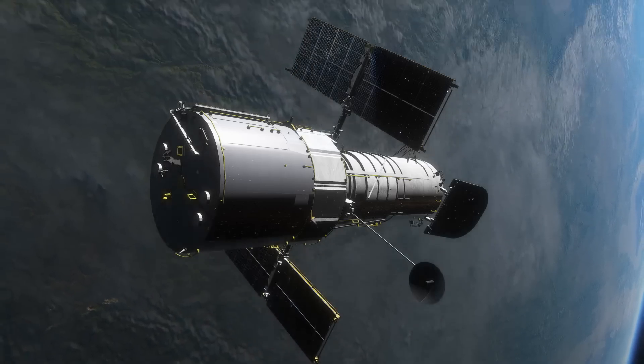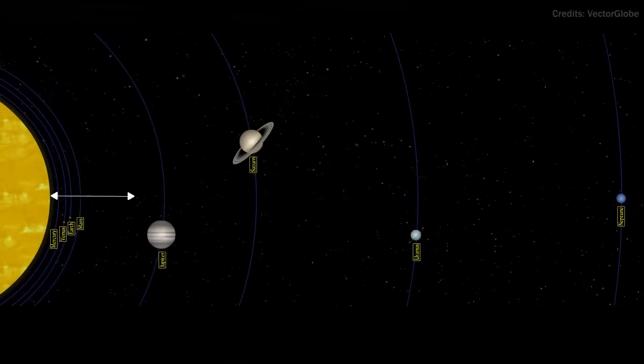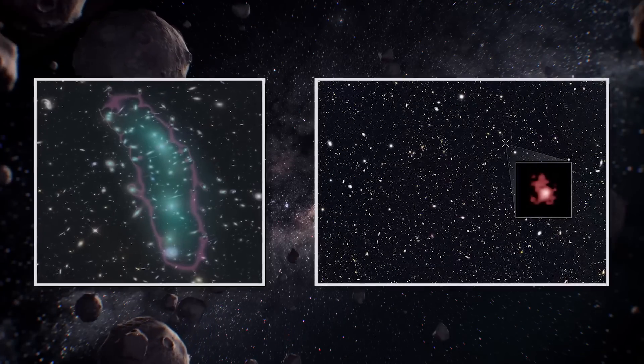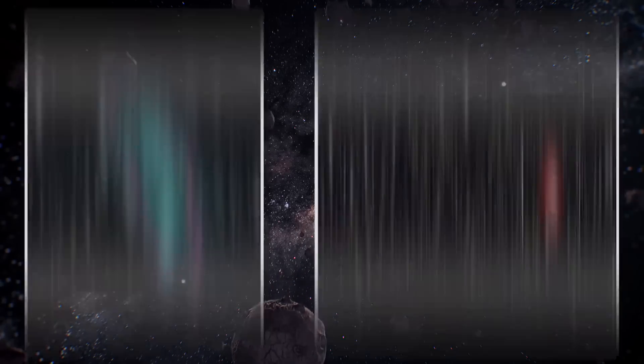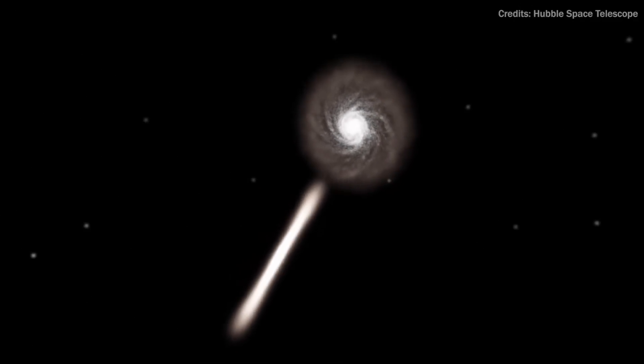The Hubble Telescope travels at 17,500 mph and has covered the distance equivalent to a trip to Neptune, our solar system's farthest planet. It has peered into the distant past to locations more than 13.4 billion light-years from Earth and has made over 1.3 million observations since its mission began in 1990.